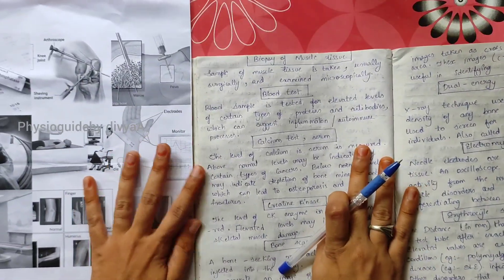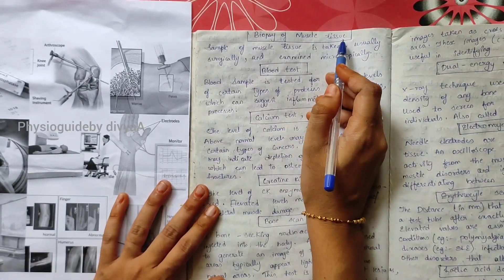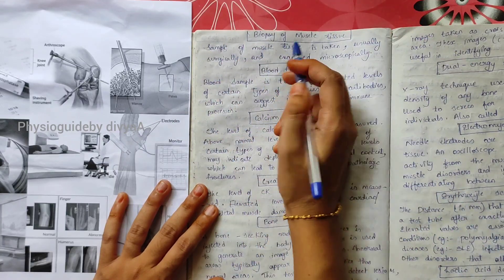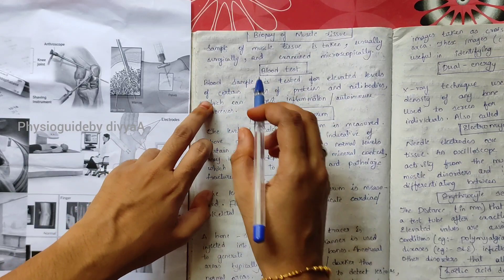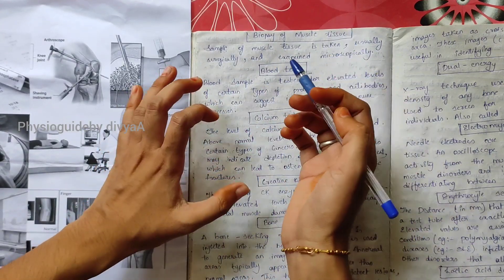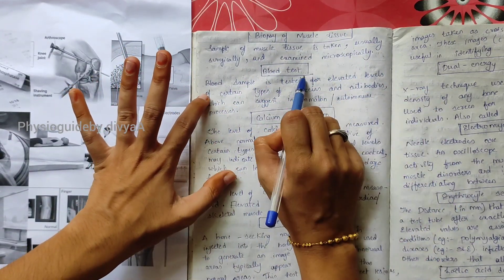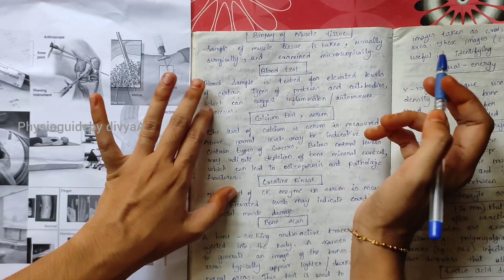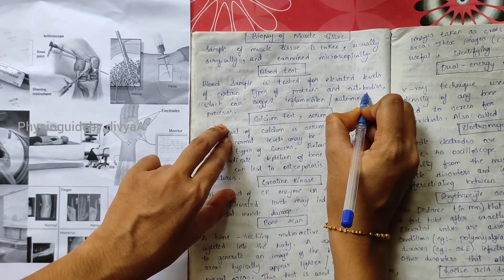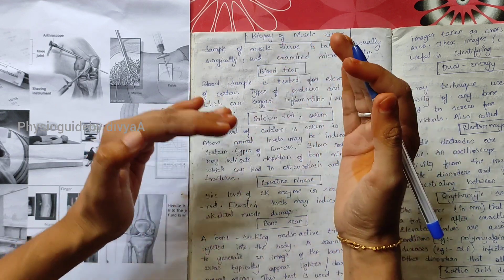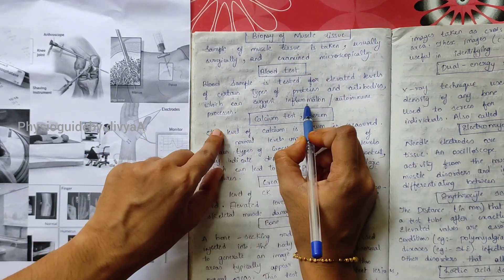Biopsy of muscle tissue: a sample of muscle tissue is taken, usually surgically, and examined microscopically. Blood test: identifies if there is an elevated level of certain proteins and antibodies. If there is elevation, we can identify inflammation and autoimmune processes.